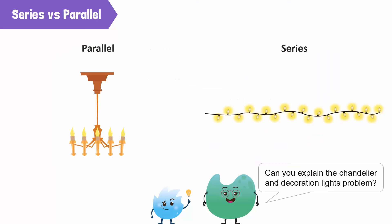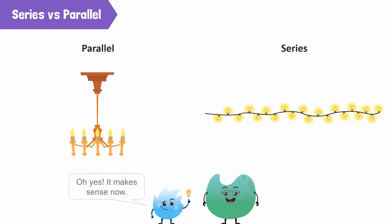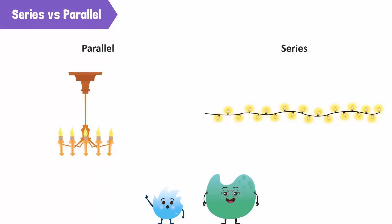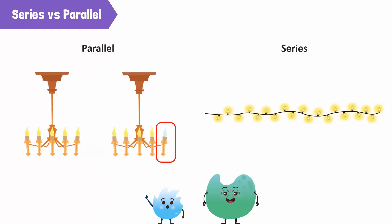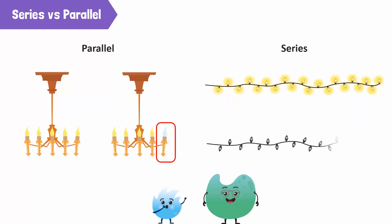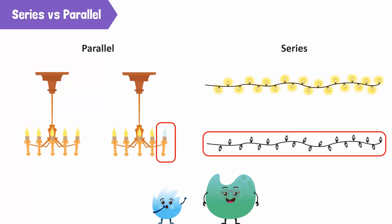Now, can you explain the chandelier and decoration lights problem you had earlier? Oh yes, it makes sense now! Only one bulb of the chandelier went out because it is connected in a parallel circuit — one broken bulb did not affect the current in the rest of the bulbs. But for the string of lights, all the bulbs went out because it is connected in series — one broken bulb will stop the flow of current to all the bulbs.